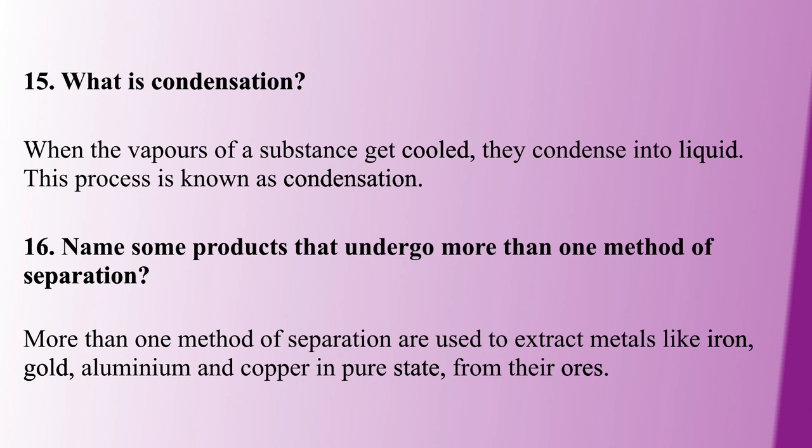Next question: name some products that undergo more than one method of separation. Metals like iron, gold, aluminium, and copper — to extract these in pure state, more than one type of separation method is used to extract the pure metal.